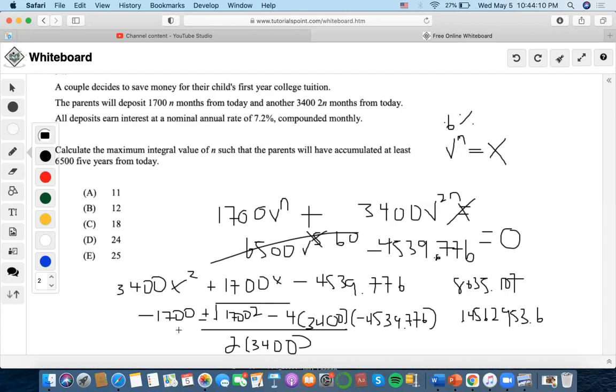We're going to get 6,335.107 divided by 2 times 3400. So it's going to be 0.9316 as one of our options for X.